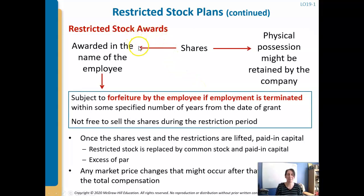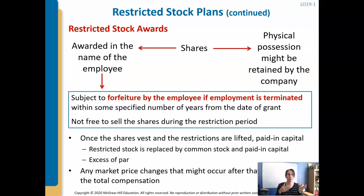Restricted stock awards are awarded in the name of the employee, but the employee can't do anything with them until the vesting period has come. They own them, but they can't use them yet. A vesting period is the time you need to be employed before you can start using the options. A lot of times you won't have access to stock awards until you've had, let's say, five years with the company — that's the vesting period, the time you work before you get this reward.